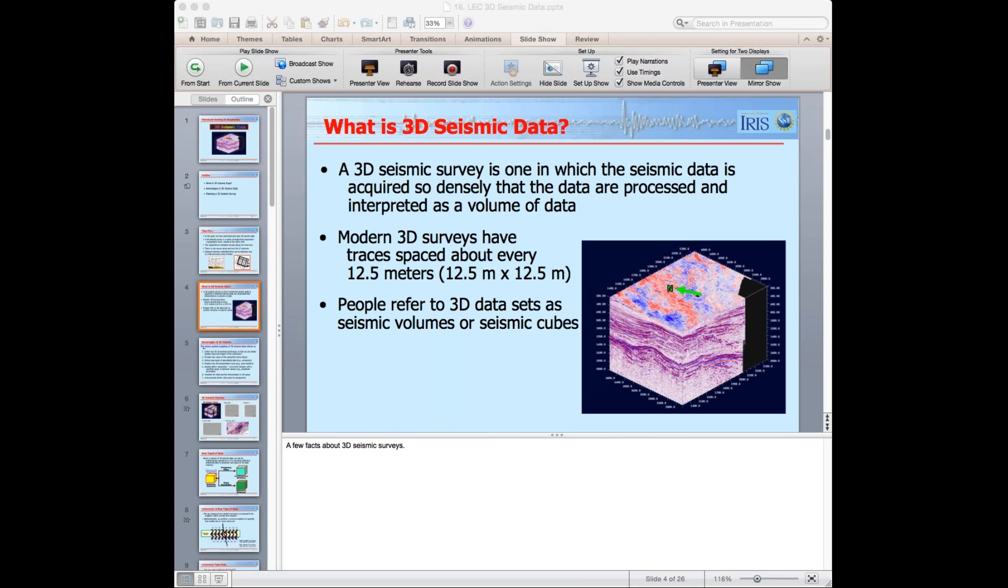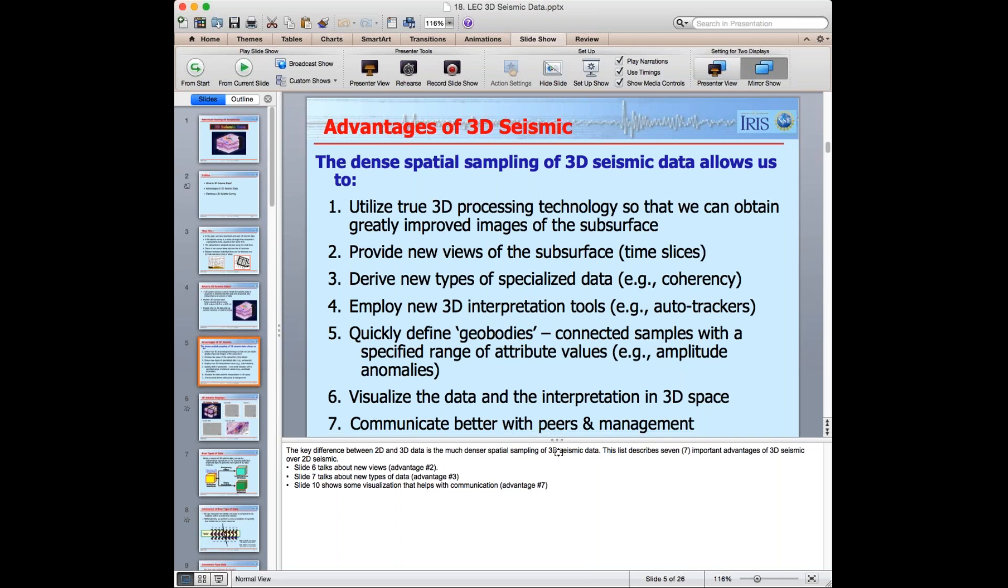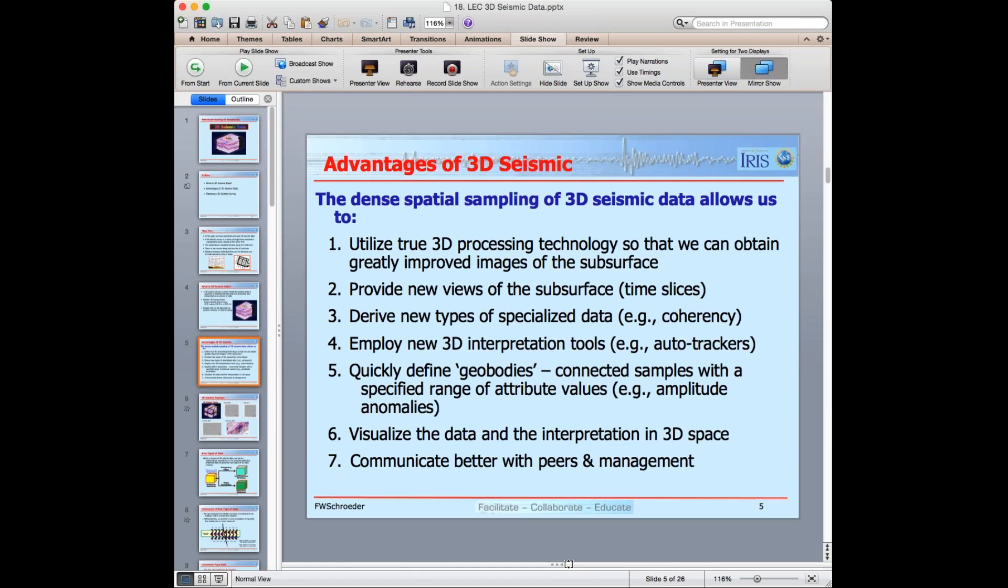So we can utilize the true 3D processing. We can get new views of the subsurface such as time slices. That was visible on the first slide. I'll show you some more time slice examples. We can derive new types of specialized data, and I'll show you an example of that using the coherency attribute. We can employ new three-dimensional interpretation tools such as auto horizon trackers. We can define things called geobodies. Those are connected seismic samples in the subsurface that has a certain range of a value. So I might see something that has a very high positive amplitude. And so I could say, connect all the samples where the amplitude is 1843 units or higher.